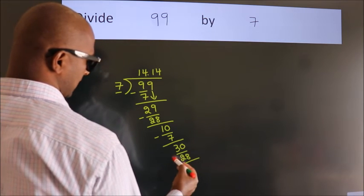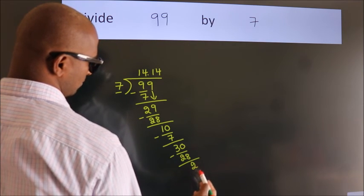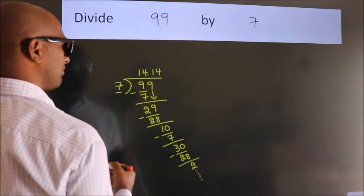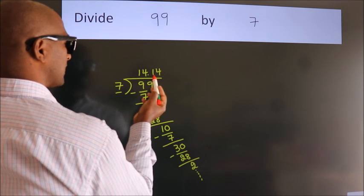Now we subtract and get 2. The division continues, but it is enough if we do up to 2 decimal places.